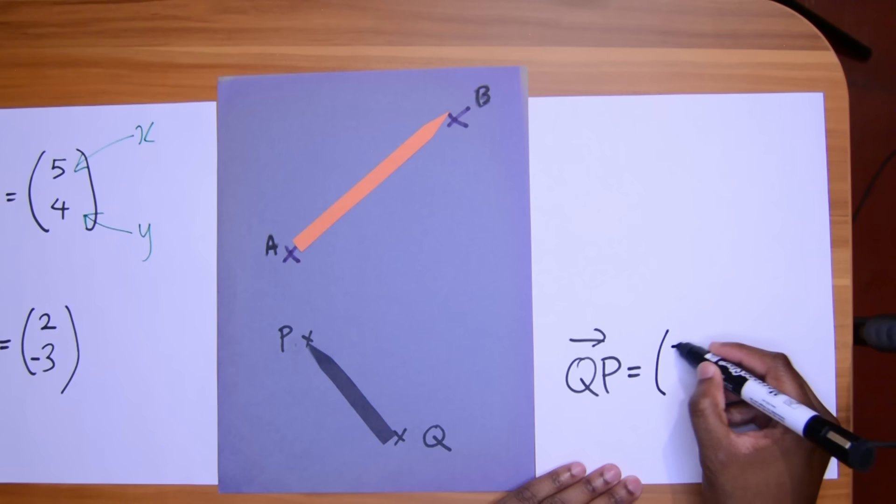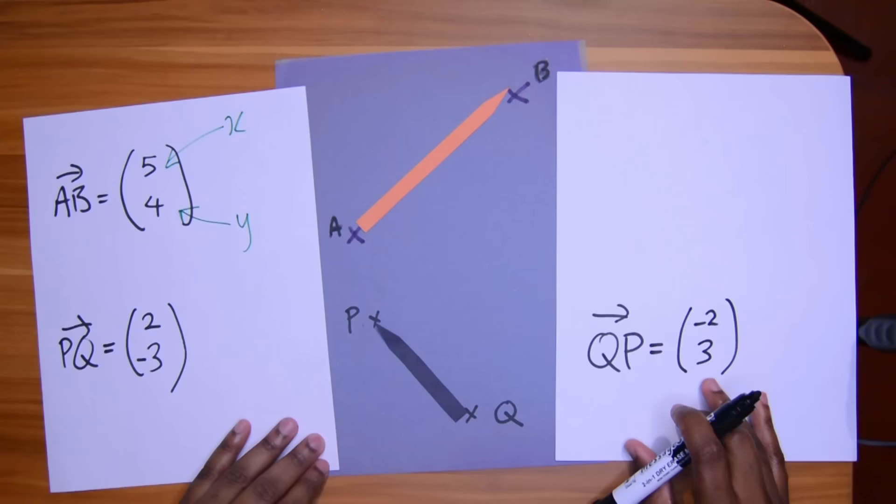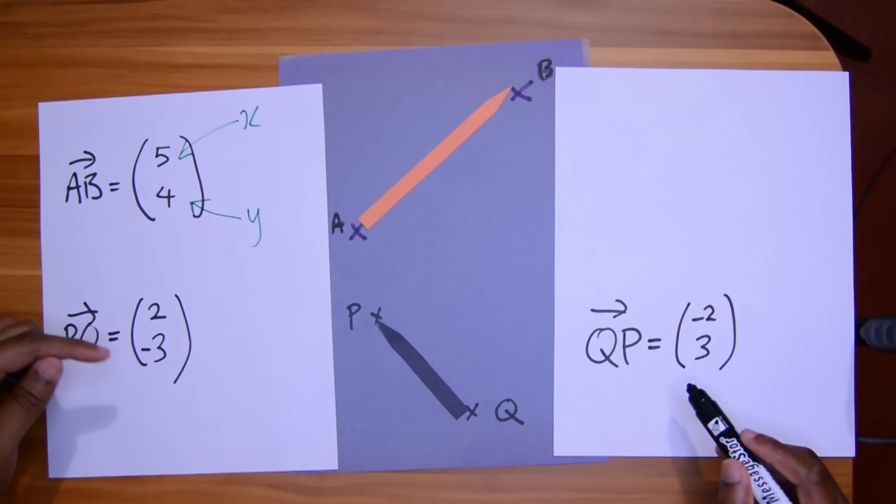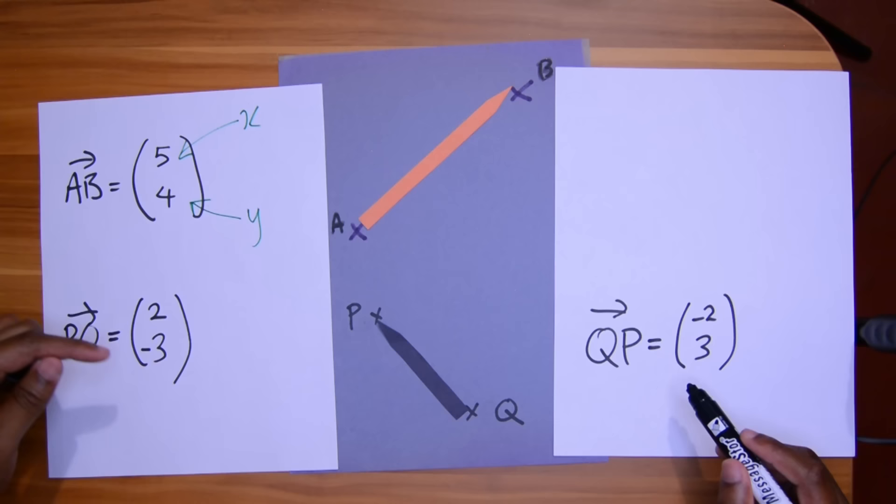Now, if you compare QP with PQ, you'll notice a little something happening there. It's the negative inverse, the additive inverse. So we can actually write stuff like this: QP is equal to negative PQ. And that's a concept we use a lot in vectors.